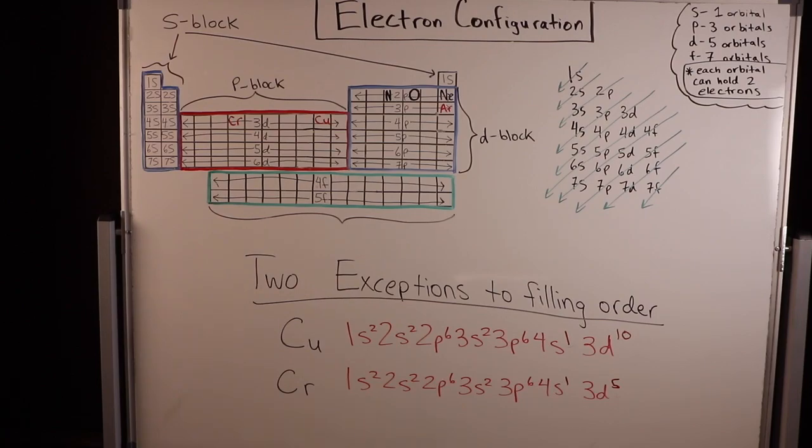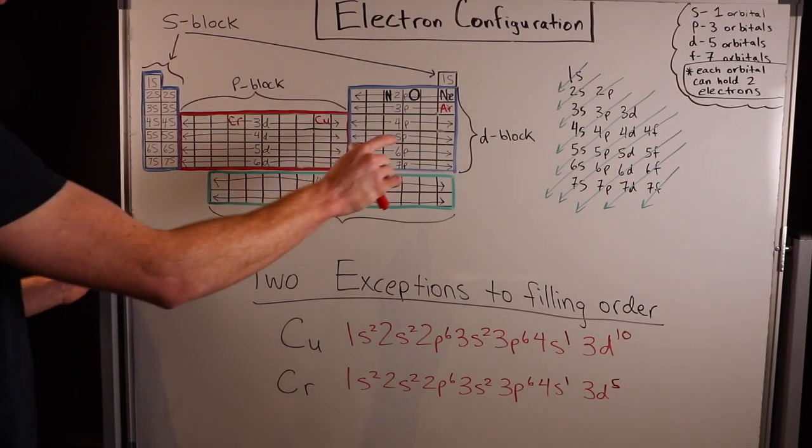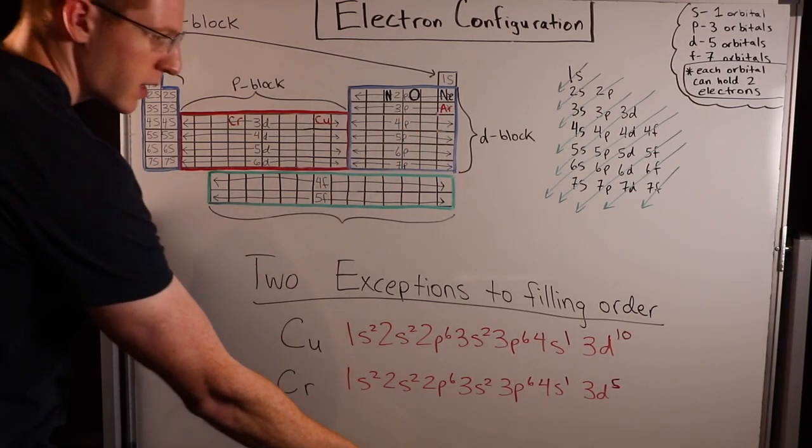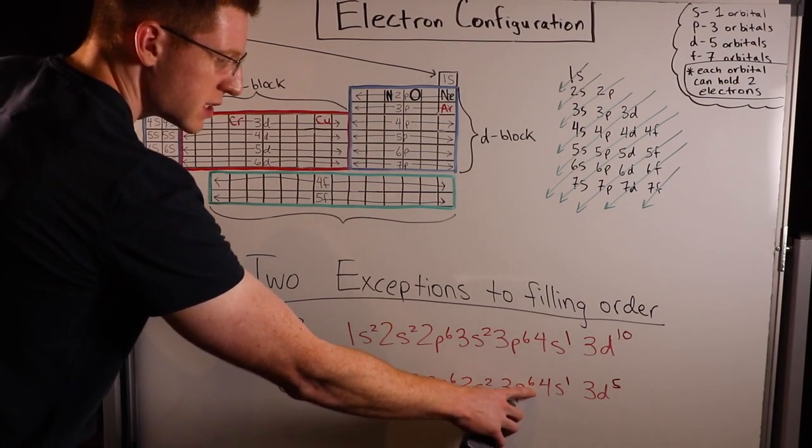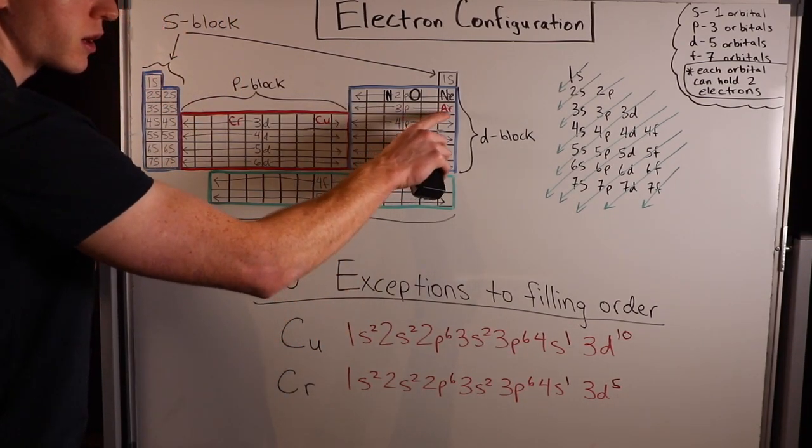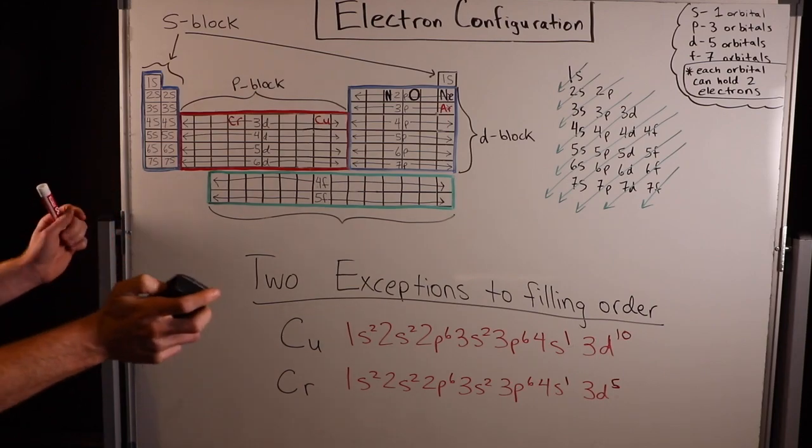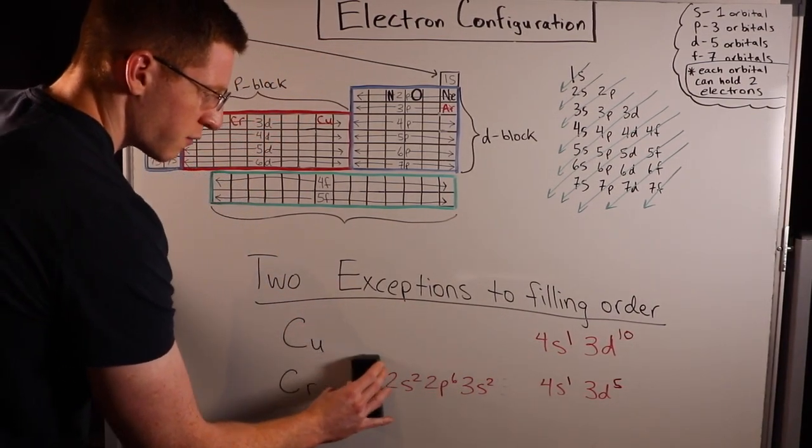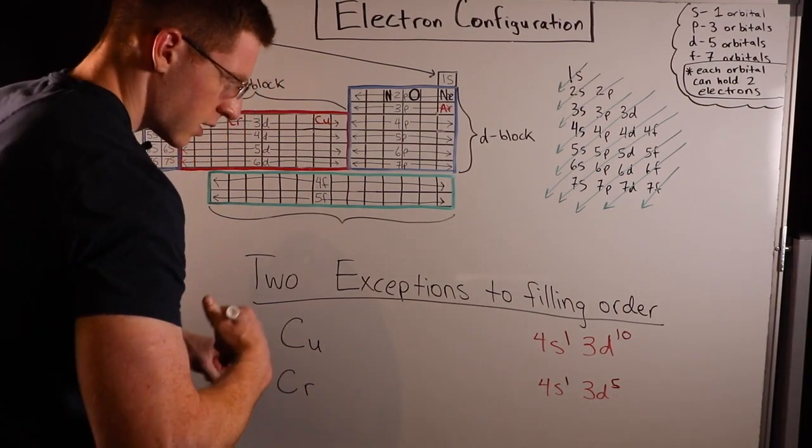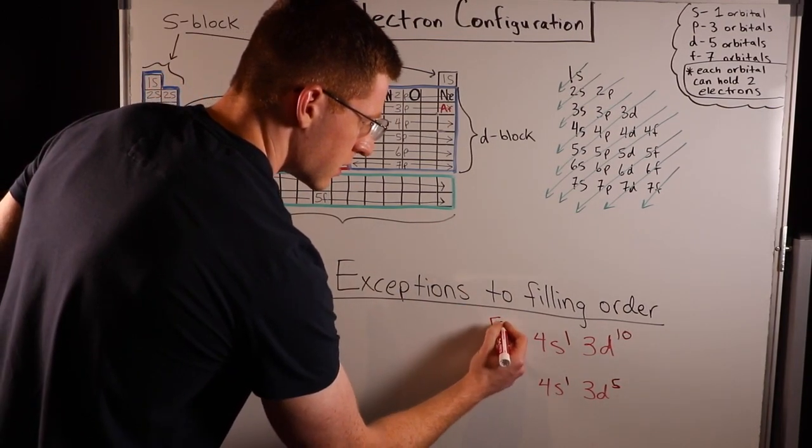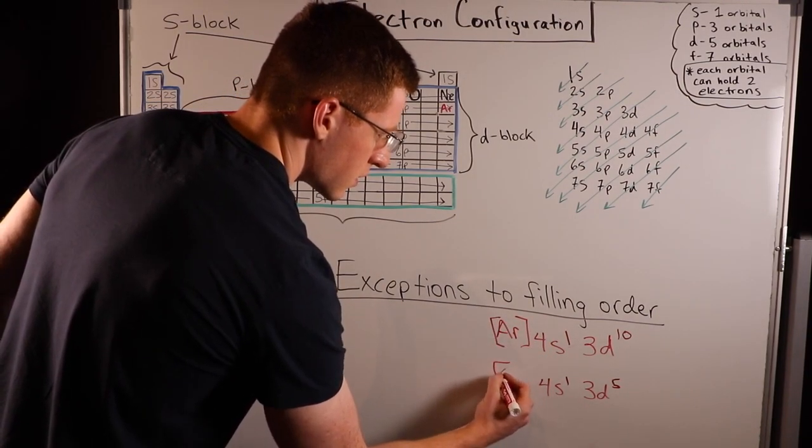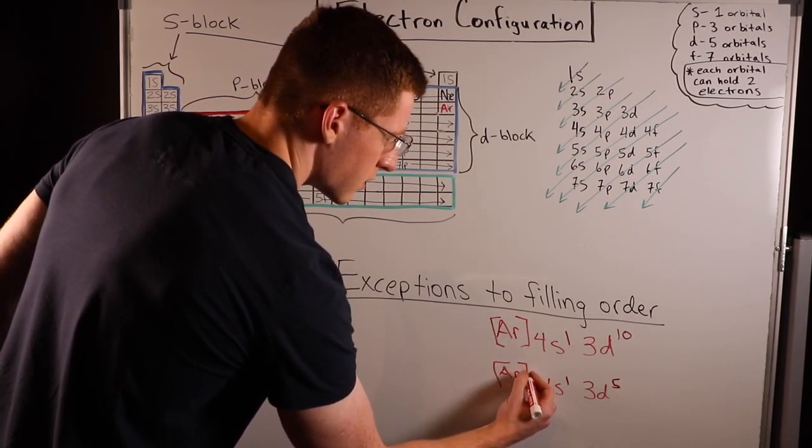Notice here how these are pretty long electron configurations. Can you think about how we might be able to shorten these? We can abbreviate these by using the noble gas argon. If we simply erase up to 3p6, because that's where argon is, and just write bracket argon, then we will have an abbreviated electron configuration, saving us a lot of space.